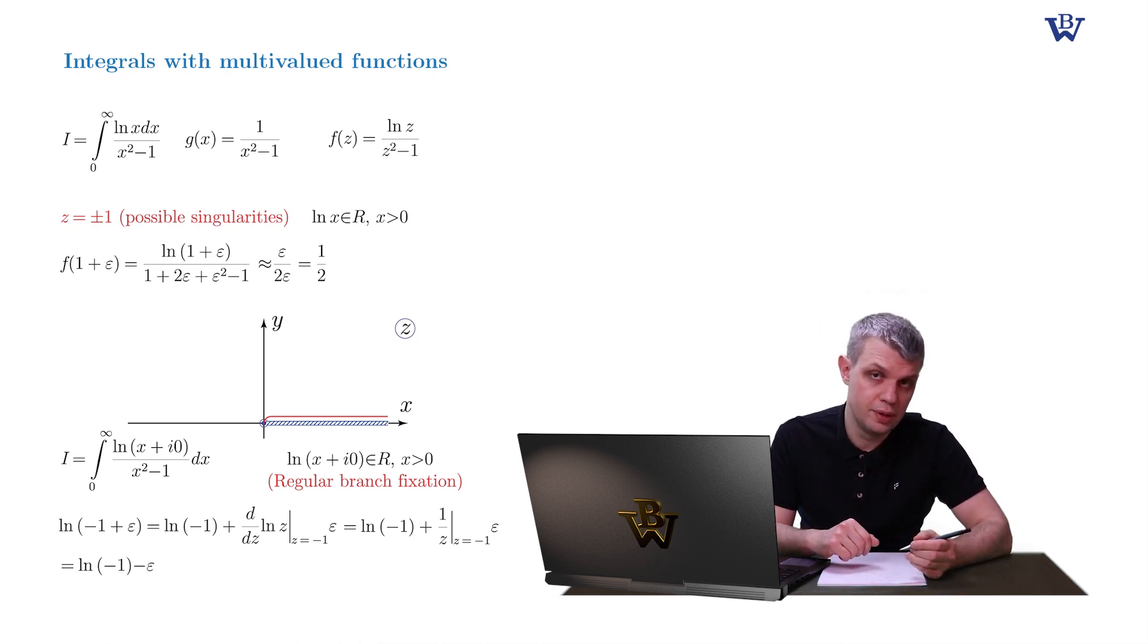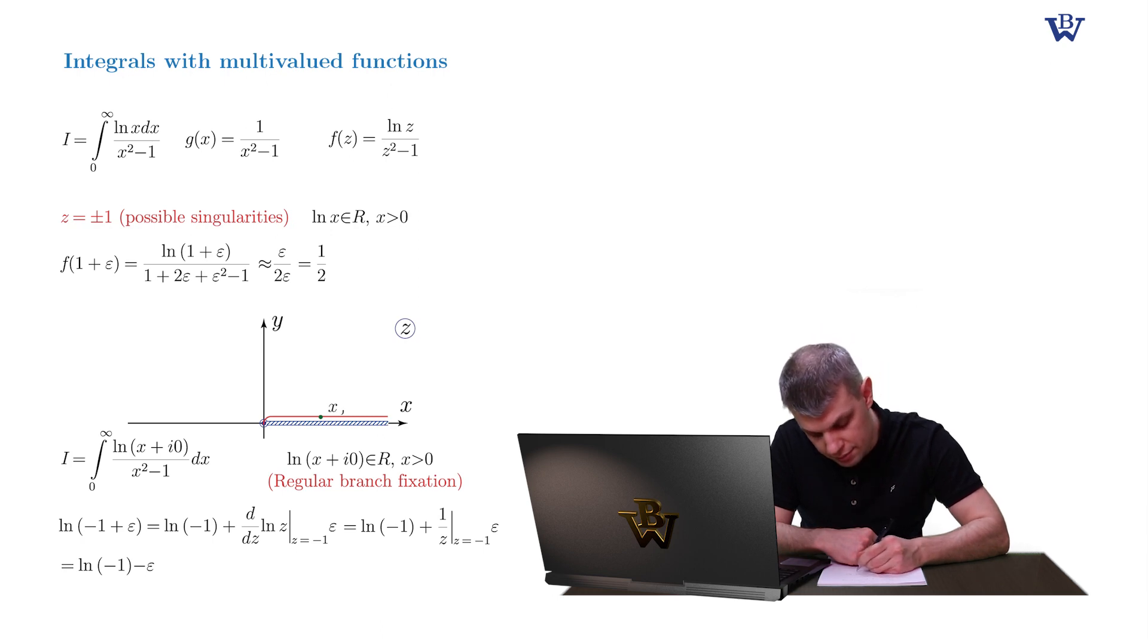Now we need to compute the log of negative 1. We proceed along the standard lines. We pick up some reference point slightly above the branch cut, x0 plus i0, and connect it with point negative 1 by some smooth contour. The change of the argument of the log is pi.